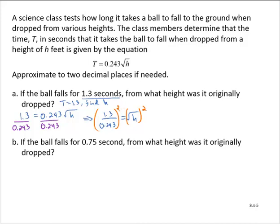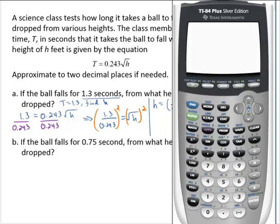So this gives me then that h is equal to 1.3 over 0.243, and that whole quantity squared. And that's correct, but it's not a very nice format. Let's get a number out of that. So I'll use the calculator now.